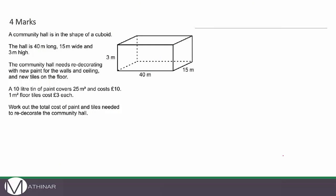Here we have a follow-up question submitted by one of our students. A community hall is in the shape of a cuboid: 40 meters long, 15 meters wide, and 3 meters high — all units are the same. The hall needs redecorating with new paint for the walls and ceiling, and new tiles for the floor. This question is actually about area rather than volume. Let's start with the tiles on the floor: the area of the floor is 40 × 15, which equals 600 meters squared.